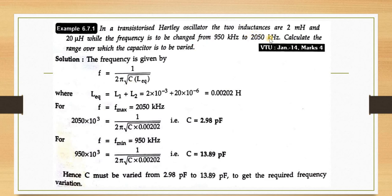At the maximum frequency of 2050 kHz, substituting all values gives C = 2.98 pF. At the minimum frequency of 950 kHz, C = 13.89 pF. Therefore, C must vary from 2.98 pF to 13.89 pF to achieve the required frequency variation.